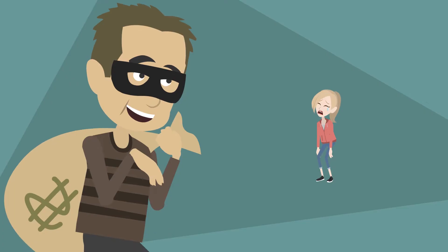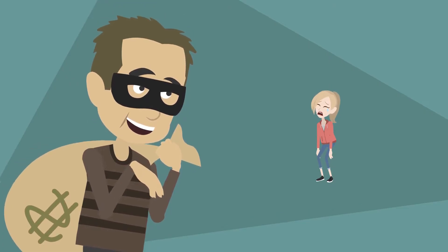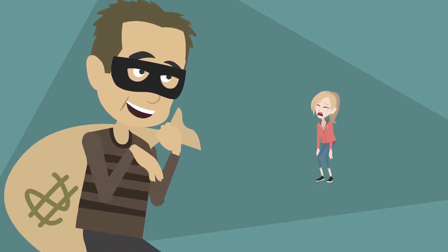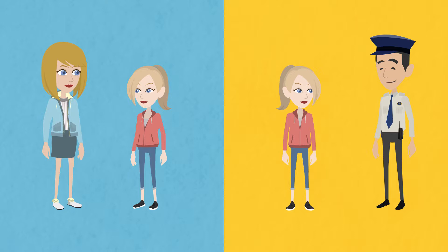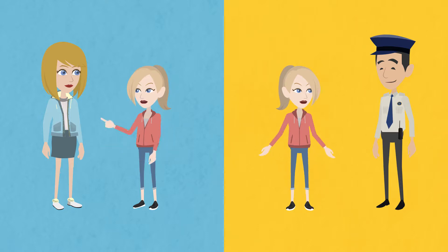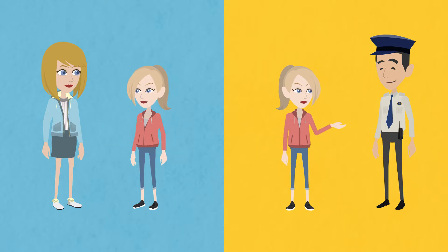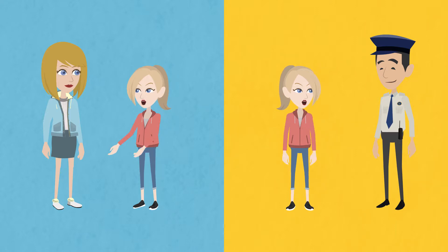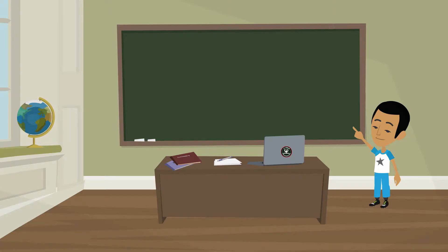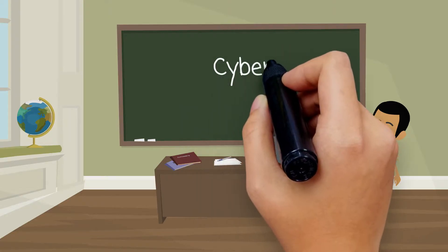What can you do if you are a victim of cyber coercion? Tell your parent or a trusted adult so that they can help. If the parent or trusted adult is not available, contact law enforcement.